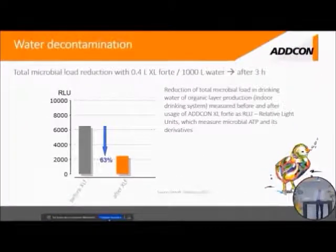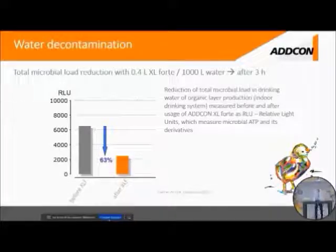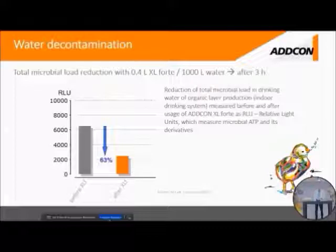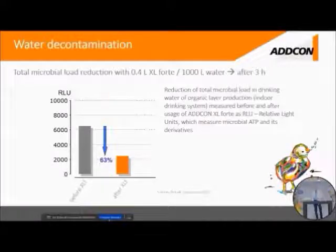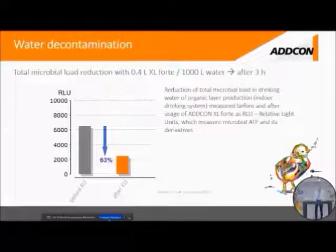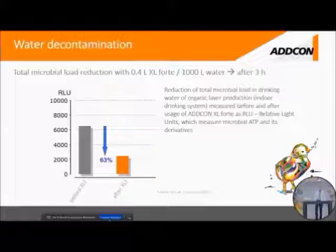We tested this in a water decontamination trial in an indoor layer production. We measured RLU — relative light units — before and after using the acidifier. Within just three hours, we were able to lower RLU from levels between 6,000 and 7,000 units down to closer to 2,000, a 63% reduction in a very short period of time. This clearly proves that using such an acidifier can hygienize and decontaminate water of various bacteria, significantly reducing the risk of cross-infections of poultry with pathogenic bacteria.